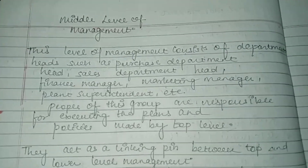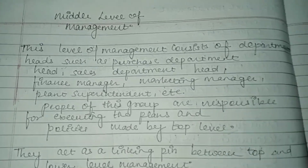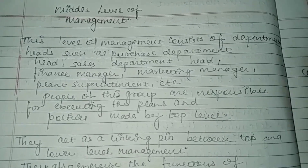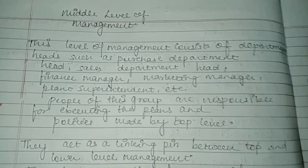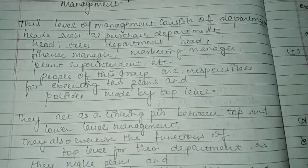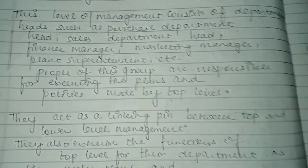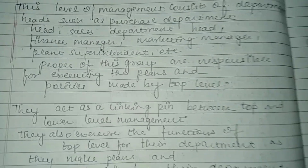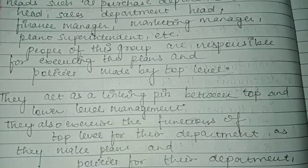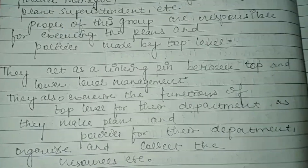What is middle level? It is basically a link between top level and executory level. This level of management consists of departmental heads such as purchase department head, sales department, finance manager, marketing manager, plant superintendent, etc.